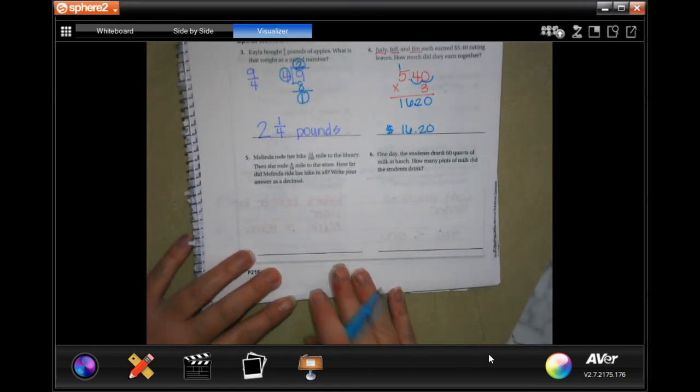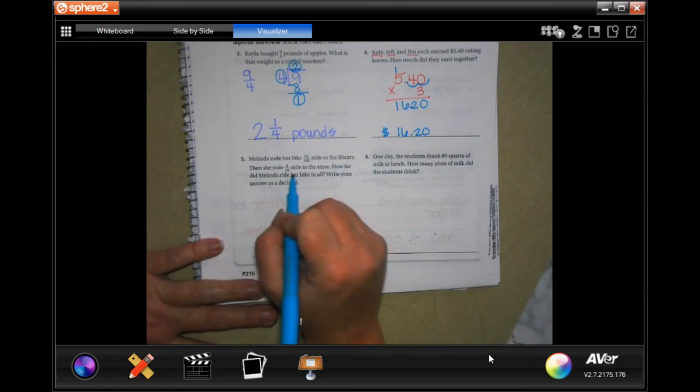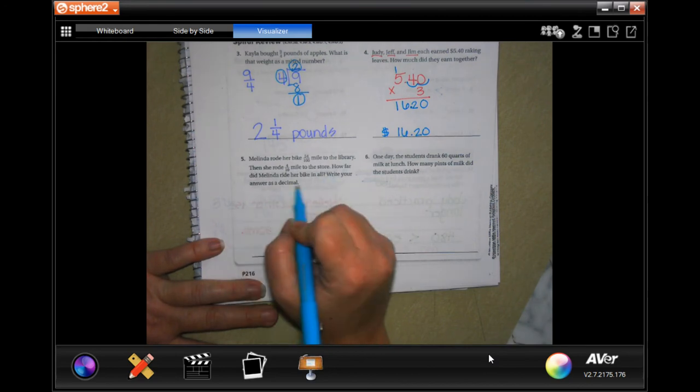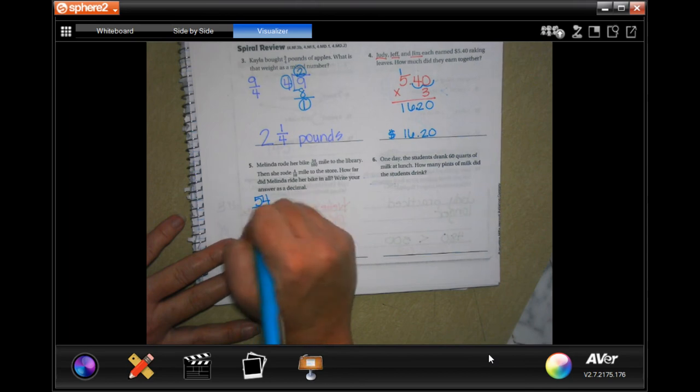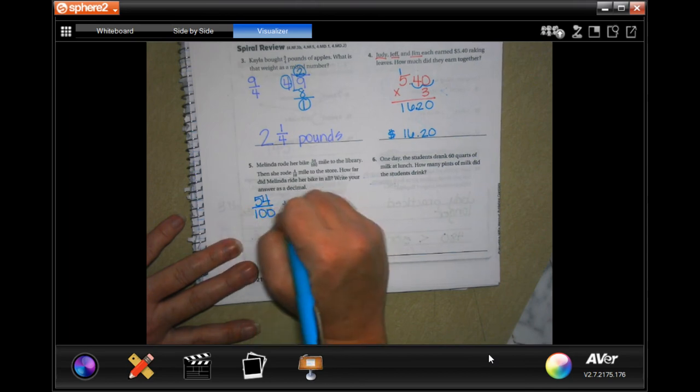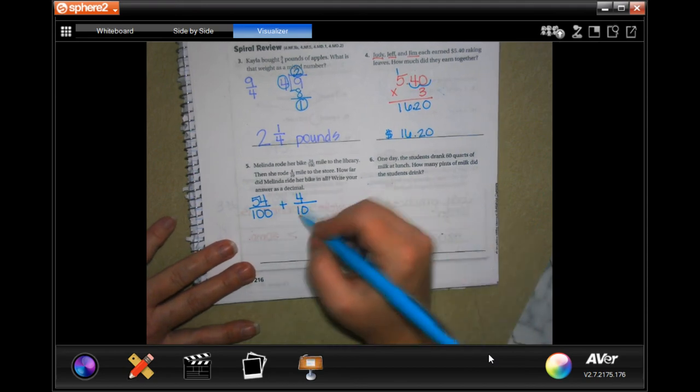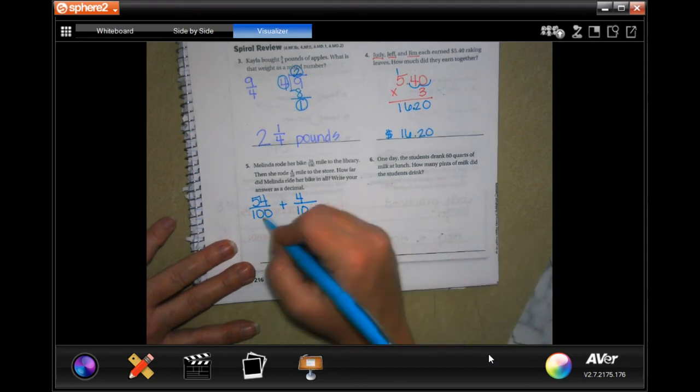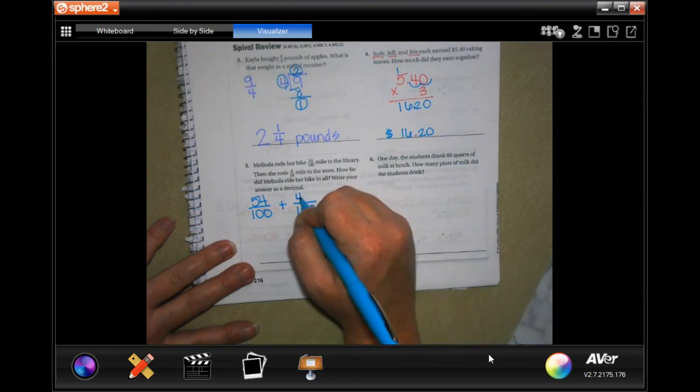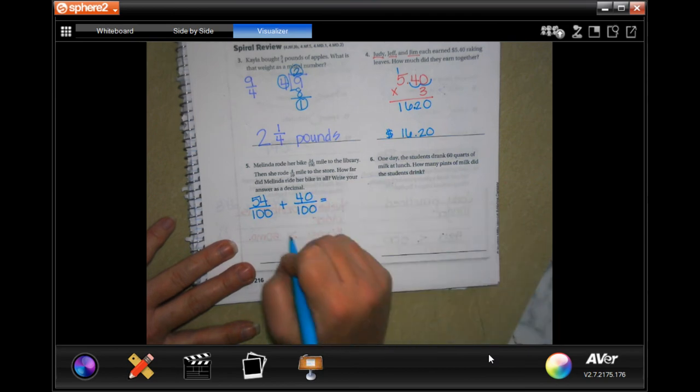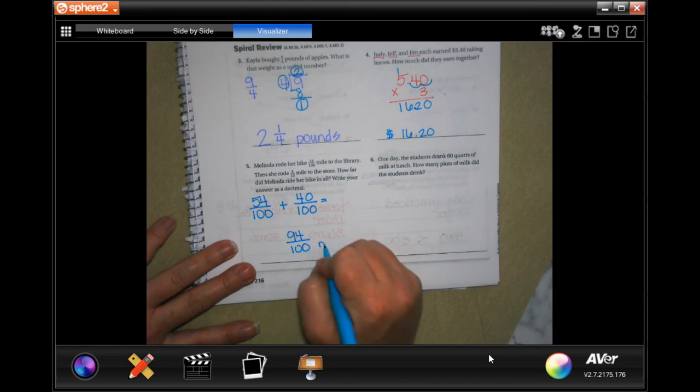Melinda rode her bike 54 hundredths of a mile to the library. She then rode 4 tenths of a mile to the store. How far did Melinda ride her bike in all? So we're going to have 54 over 100, and currently we have 4 over 10. To get 10 to 100, which is our common denominator, I would multiply it by 10, which gives me 100. Multiply 4 by 10, I get 40. So now I have 94 over 100 of a mile.